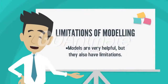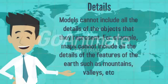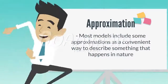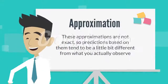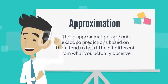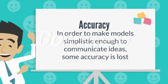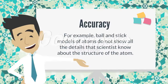Now, let's discuss the limitations of modeling. Models are very helpful, but they also have limitations. Models cannot include all the details of the objects that they represent. For example, maps cannot include all the details of features of the earth such as mountains and valleys. Most models include some approximations as a convenient way to describe something that happens in nature. These approximations are not exact, so predictions based on them tend to be a little bit different from what you actually observe. In order to make models simplistic enough to communicate ideas, some accuracy is lost. For example, ball and stick models of atoms do not show all the details that scientists know about the structure of the atom.